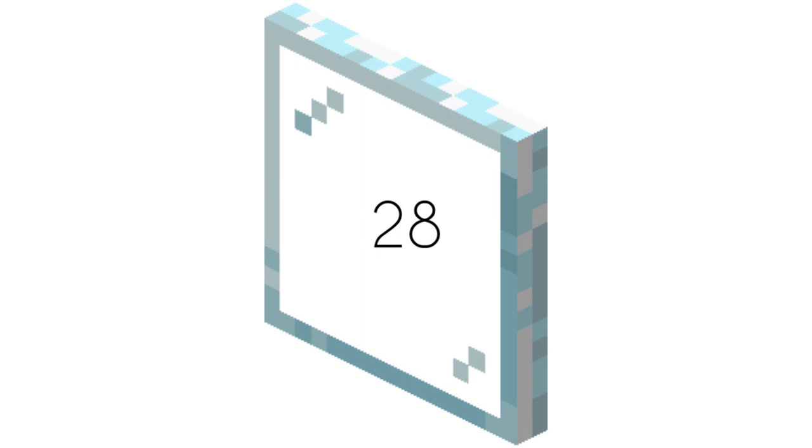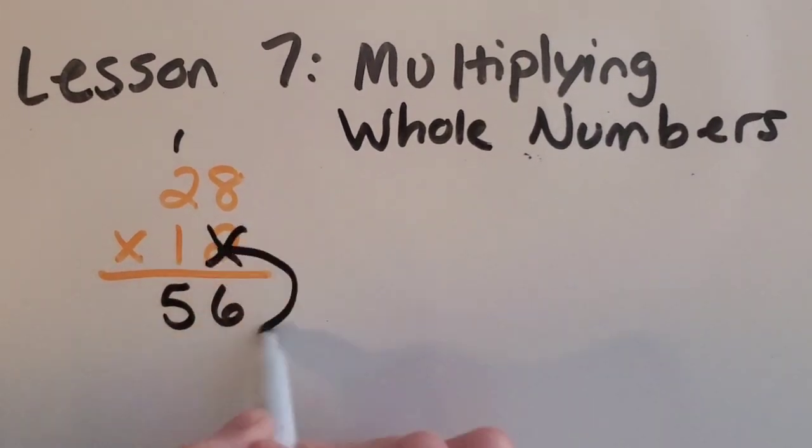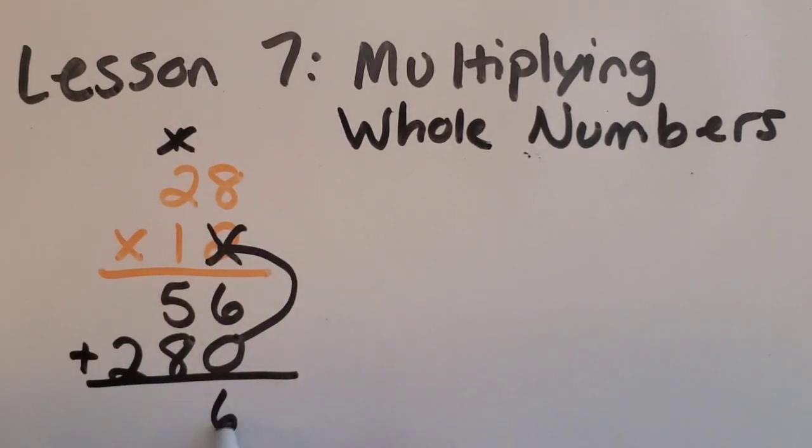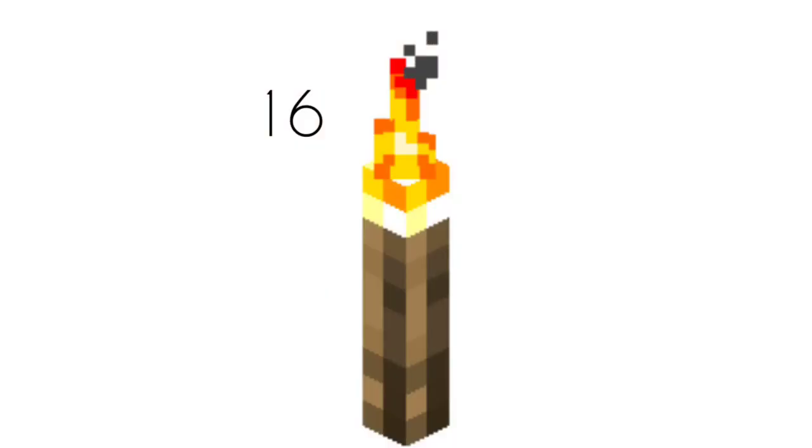Here's a little easier one. We need 28 window panes or glass panes per cabin. How many do we need for 12 cabins? Here's our last one. We need 16 torches per cabin. How many do we need for 12 cabins? Help us out.